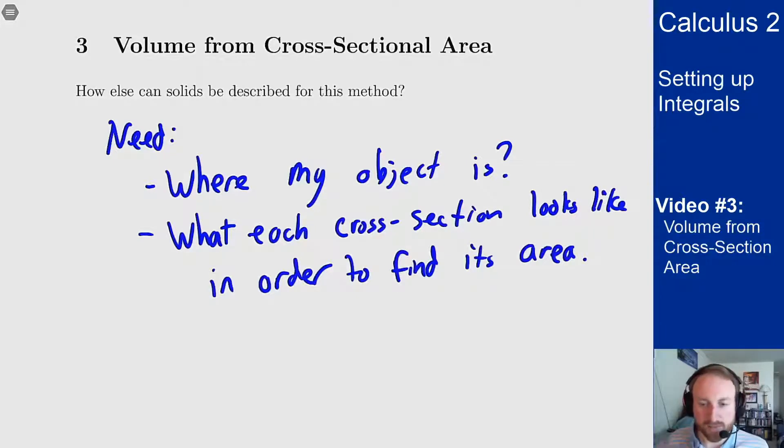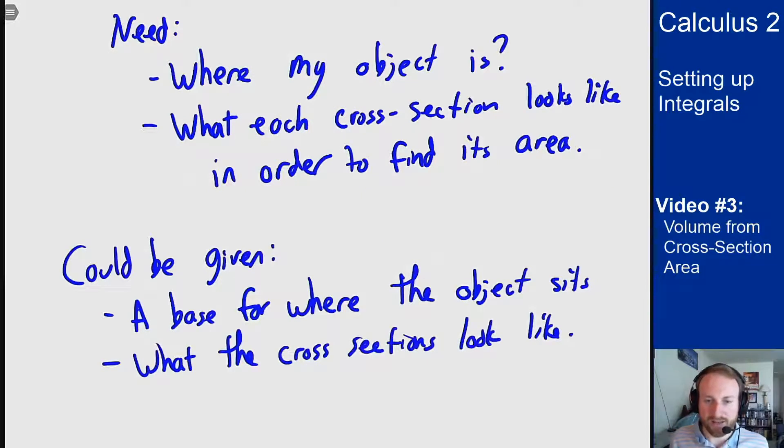In the last case we had a geometric object that we knew and understood pretty well, but you could also have problems where you're given this information exactly what you need. You could be given sort of a base for the object where it sits and what every cross section looks like, and that'll be enough to attack this problem.